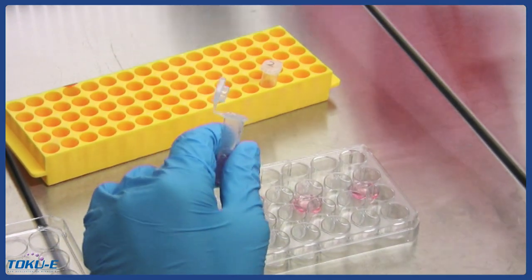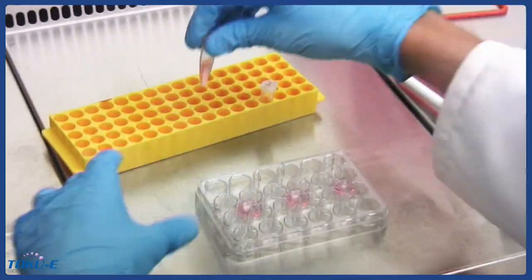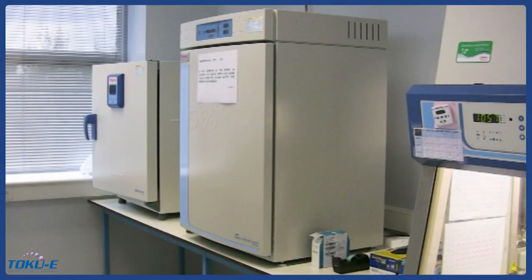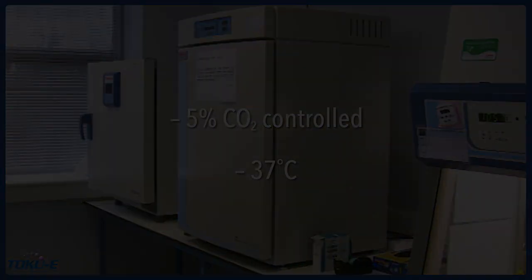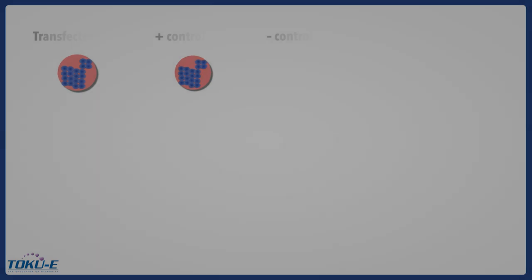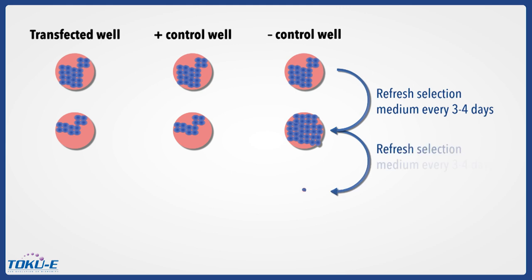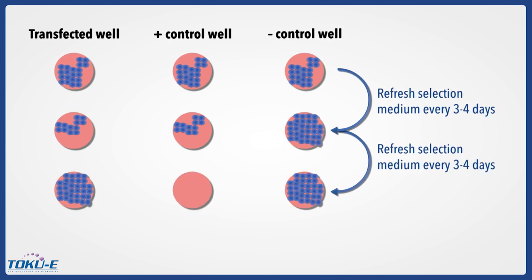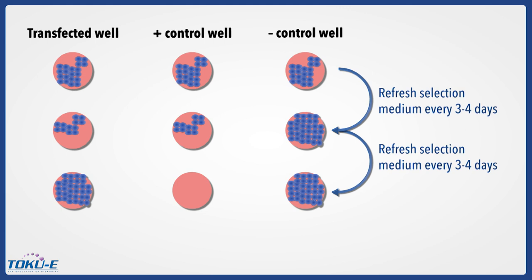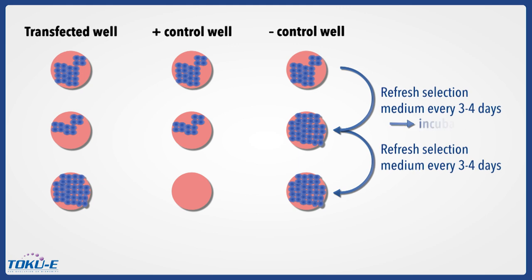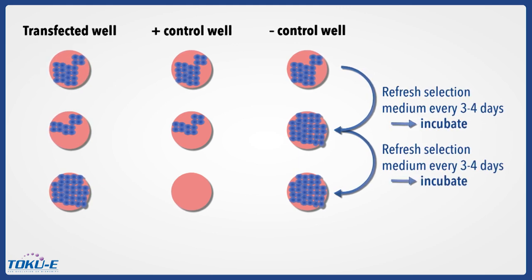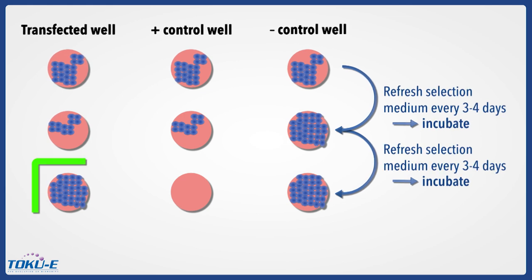The negative control is expected to grow to confluence and the positive control is expected to die. Place the 24-well plate in the 5% CO2-controlled incubator at 37 degrees Celsius. Examine cell death and survival and refresh the selection medium every 3 to 4 days for 10 days to maintain selective pressure, as the cells will continually metabolize and eliminate the antibiotic. Place the 24-well plate in the 5% CO2-controlled incubator at 37 degrees Celsius after each time the selective medium is refreshed.